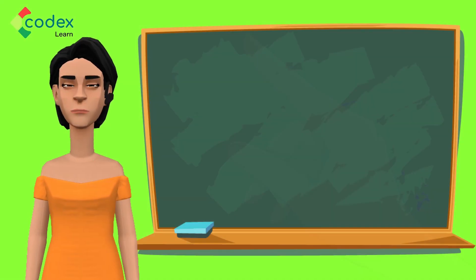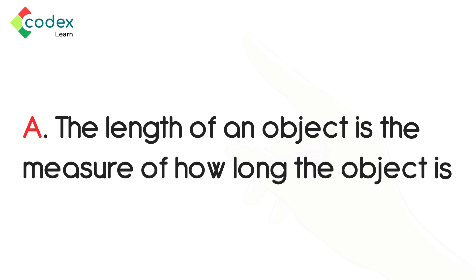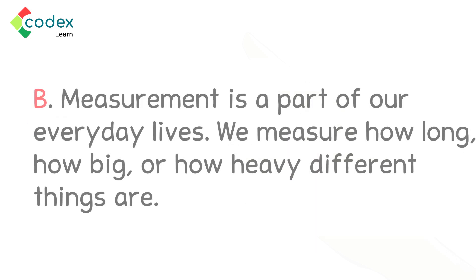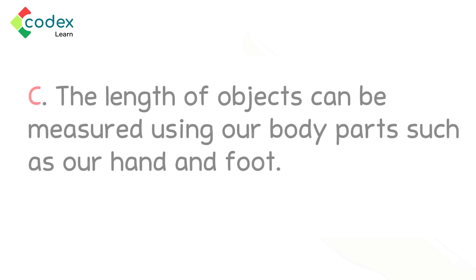Now, let us go back to the beginning in a few simple points. A. The length of an object is the measure of how long the object is. B. Measurement is a part of our everyday lives. We measure how long, how big, or how heavy different things are. C. The length of objects can be measured using our body parts, such as our hand and foot.